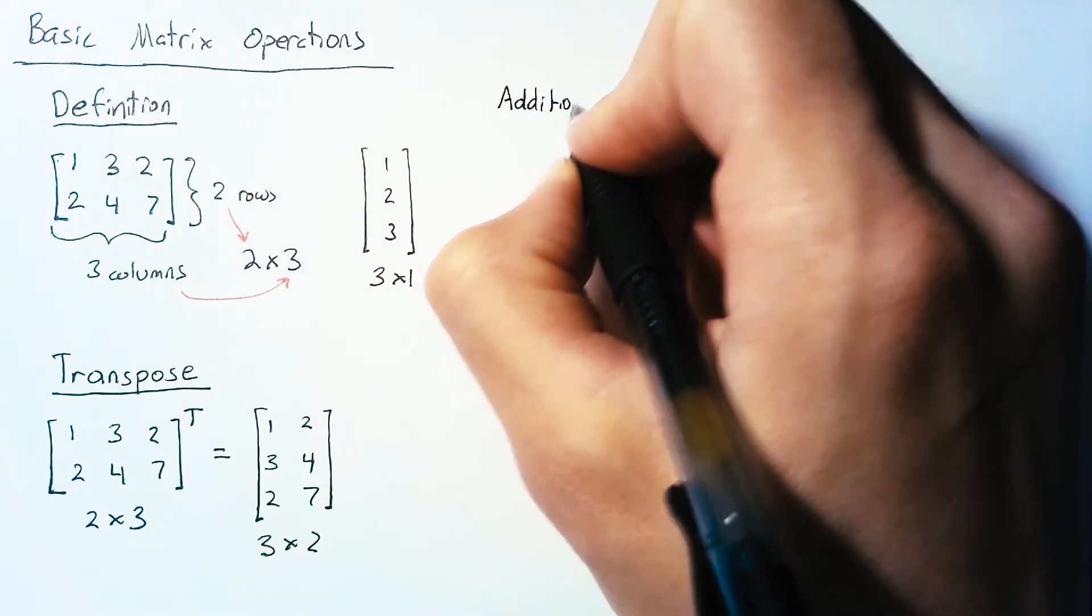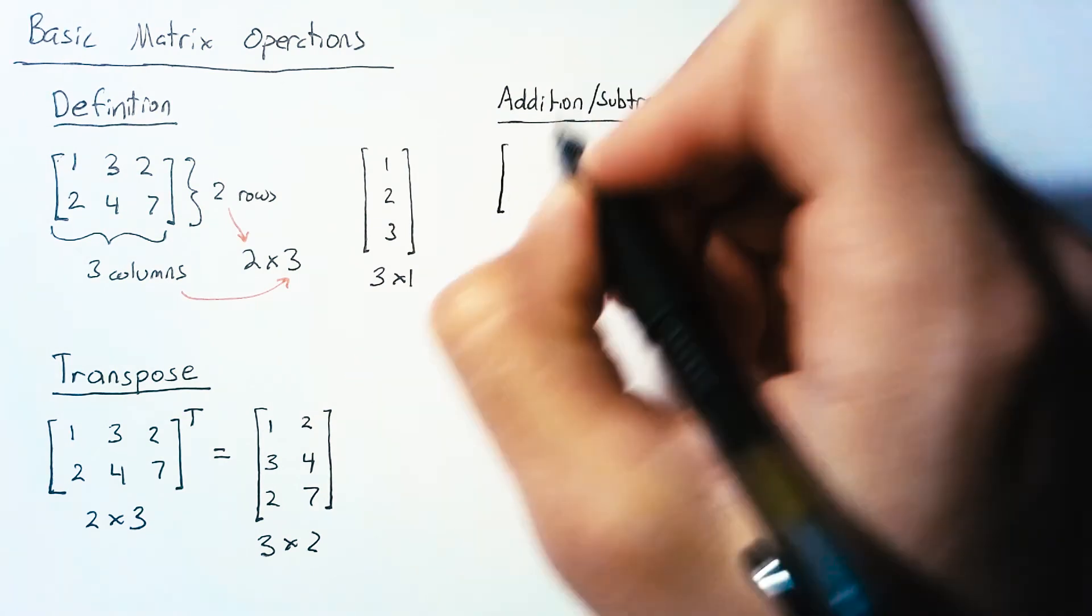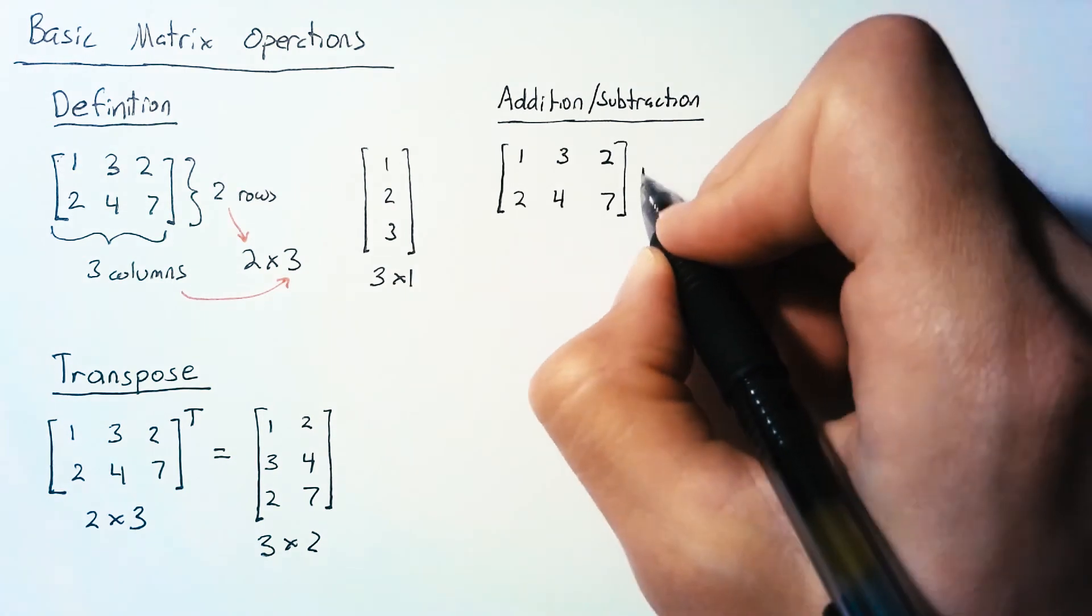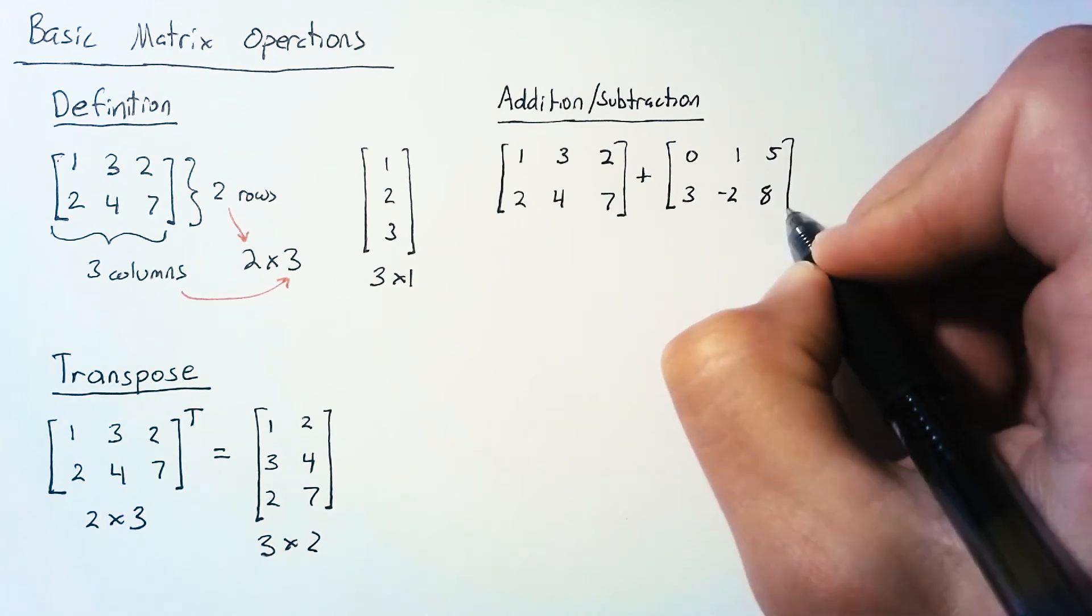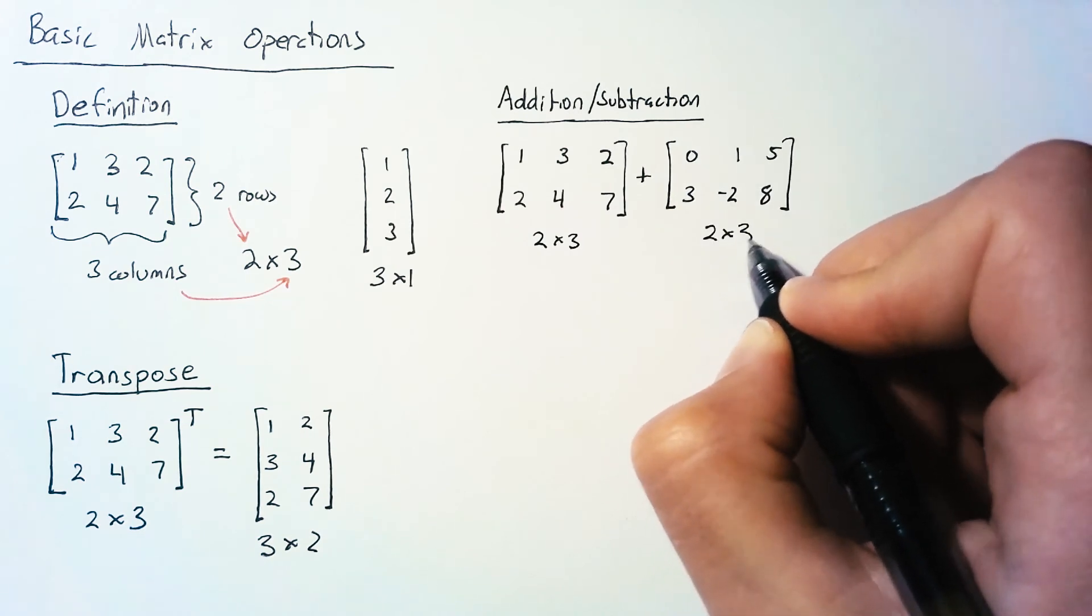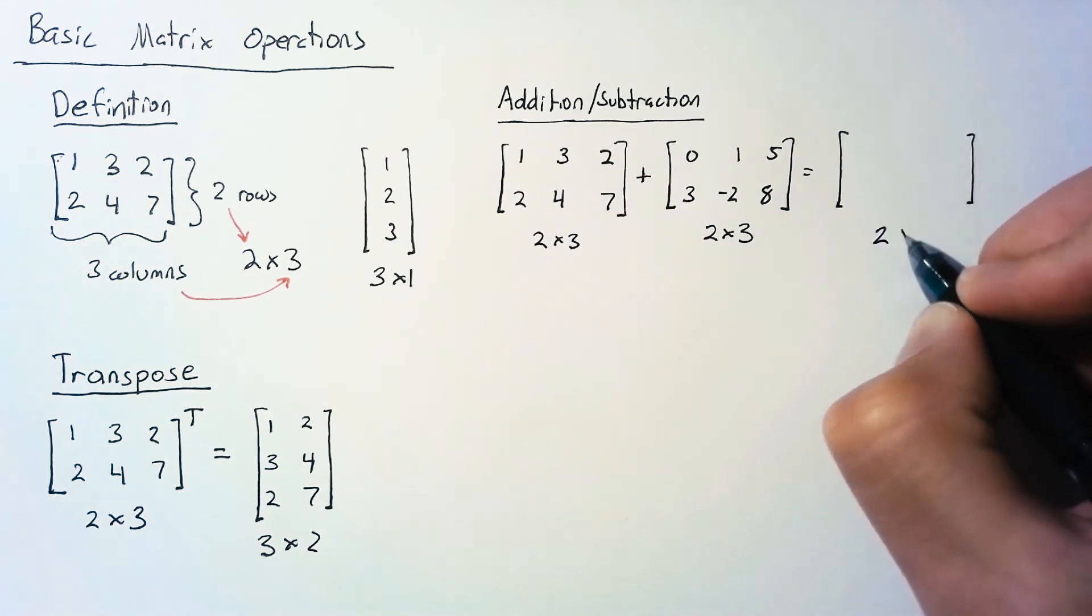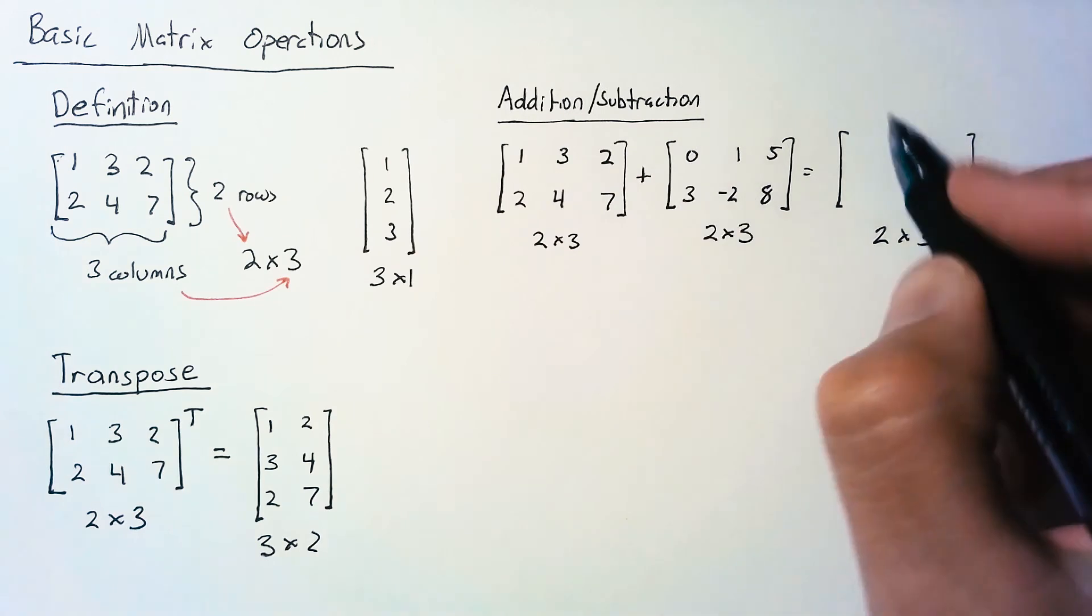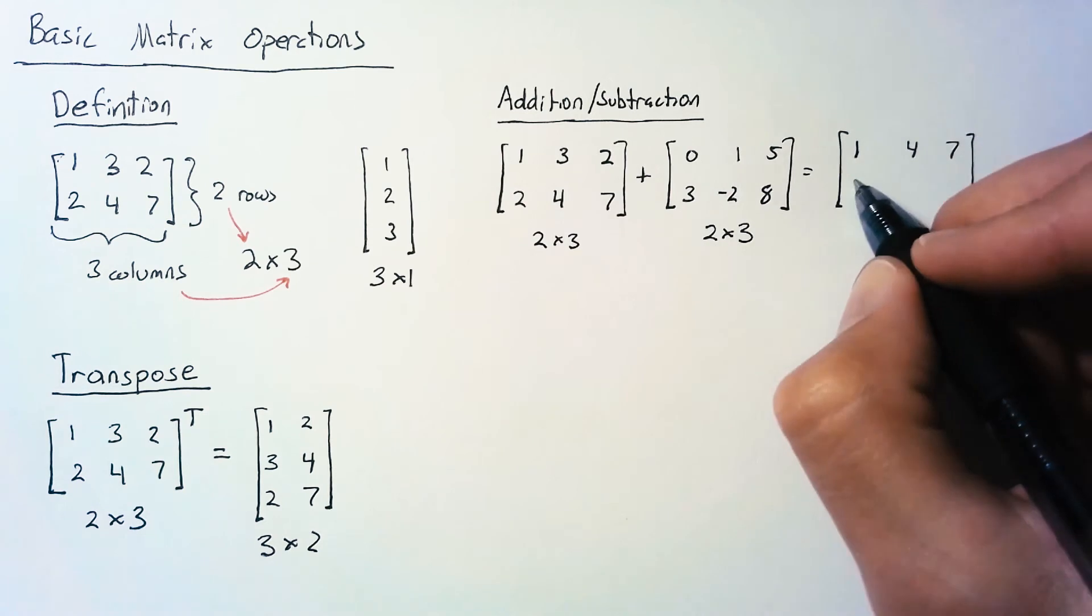Next is addition and subtraction, which are essentially the same thing. We look element by element, so we have to add and subtract matrices with the exact same shape. If this matrix is 2×3, the matrix we're adding must also be 2×3, and we'll end up with a 2×3. We just add corresponding elements: 1+0=1, 3+1=4, 2+5=7, and so on.